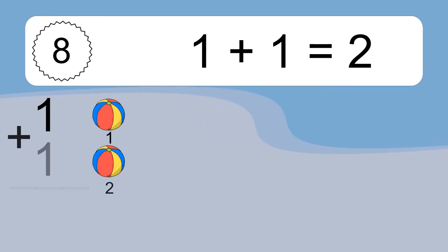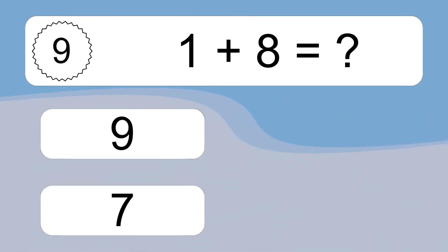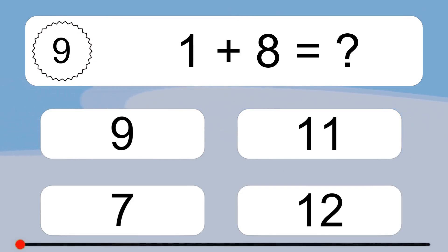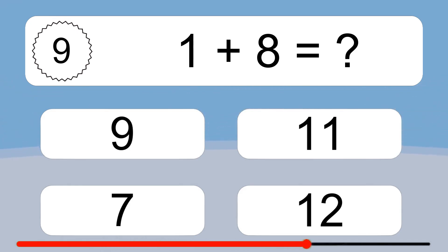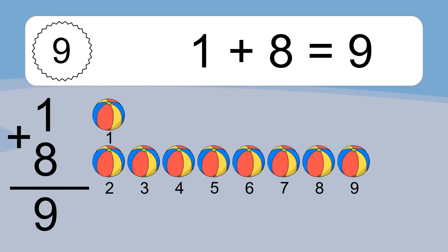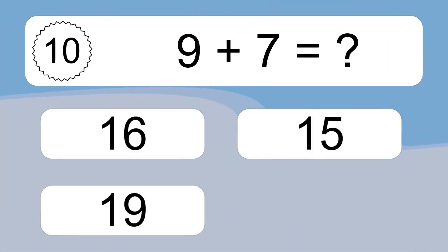1 plus 1 equals what? 1 plus 1 equals 2. Let's count it: 1, 2. 1 plus 8 equals what? 1 plus 8 equals 9. Let's count it: 1, 2, 3, 4, 5, 6, 7, 8, 9.